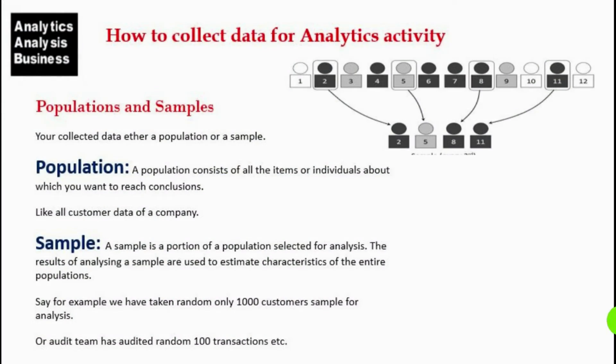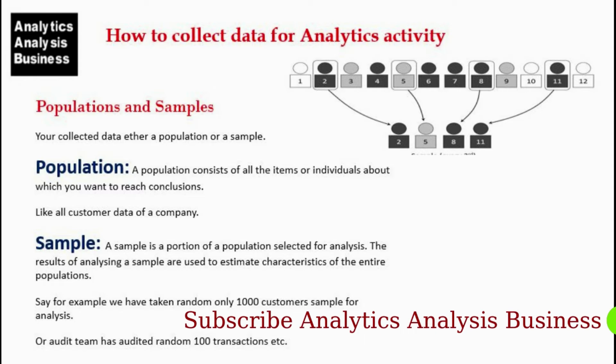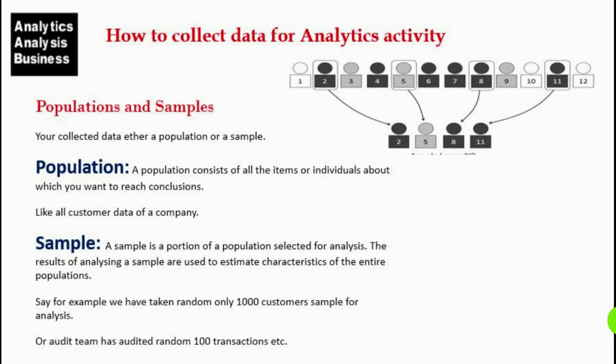Populations and samples: your collected data is either a population or a sample. A population consists of all the items or individuals about which you want to reach conclusions, like all customer data of a company. A sample is a portion of a population selected for analysis. The results of analyzing a sample are used to estimate the characteristics of the entire population — for example, taking a random sample of 1,000 customers, or an audit team auditing a random 100 transactions.